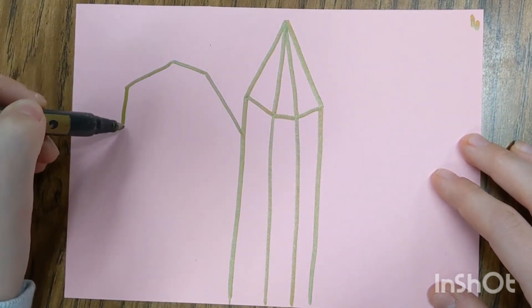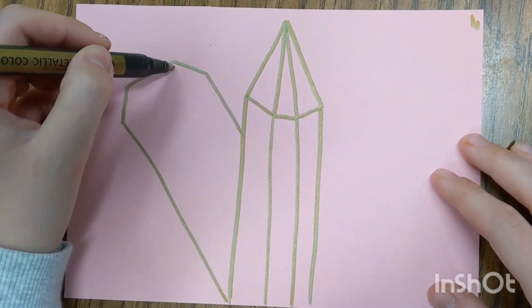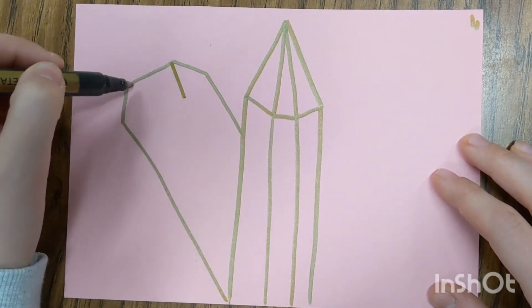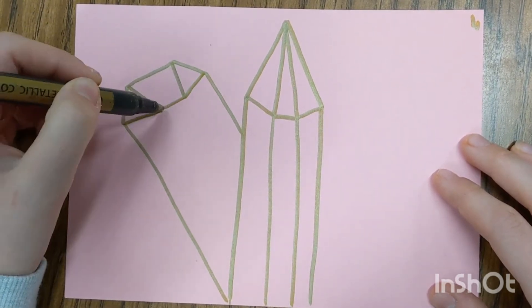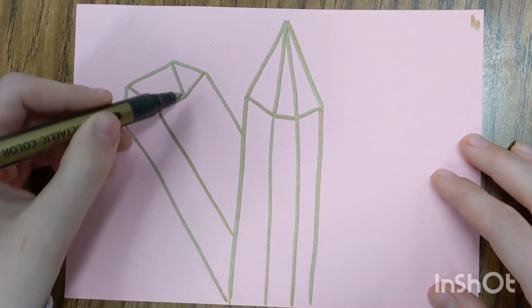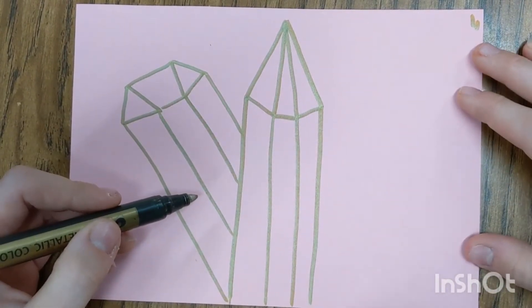Now we're going to start drawing another crystal going behind this first one. Go ahead and draw a shape that's a little more boxier and less pointed. Then let's draw two lines that go down from the top. Connect them together with two more lines and draw some long vertical lines that go behind our first crystal.